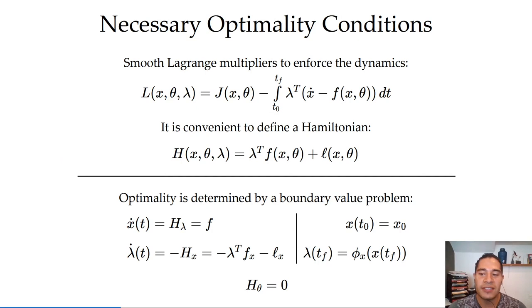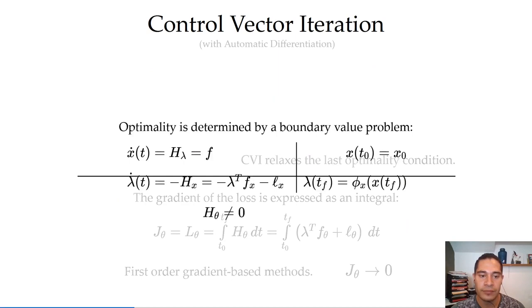The Euler-Lagrange necessary conditions are derived by enforcing the dynamics with smooth Lagrange multipliers, and by introducing a Hamiltonian function, the conditions can be expressed easily as a system of differential equations with boundary conditions at the initial and final time.